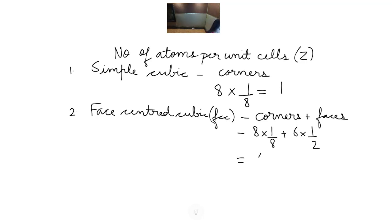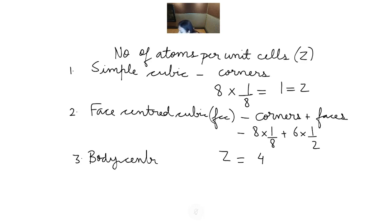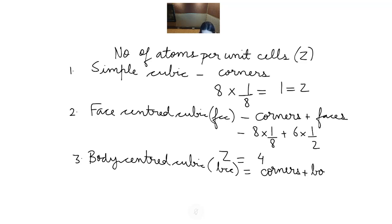For body-centered cubic (BCC), atoms are present at corners as well as the body center. So Z = 8×(1/8) + 1 = 2. Z for BCC is 2. We will be using these Z values in numericals for calculating the number of unit cells in a particular system.